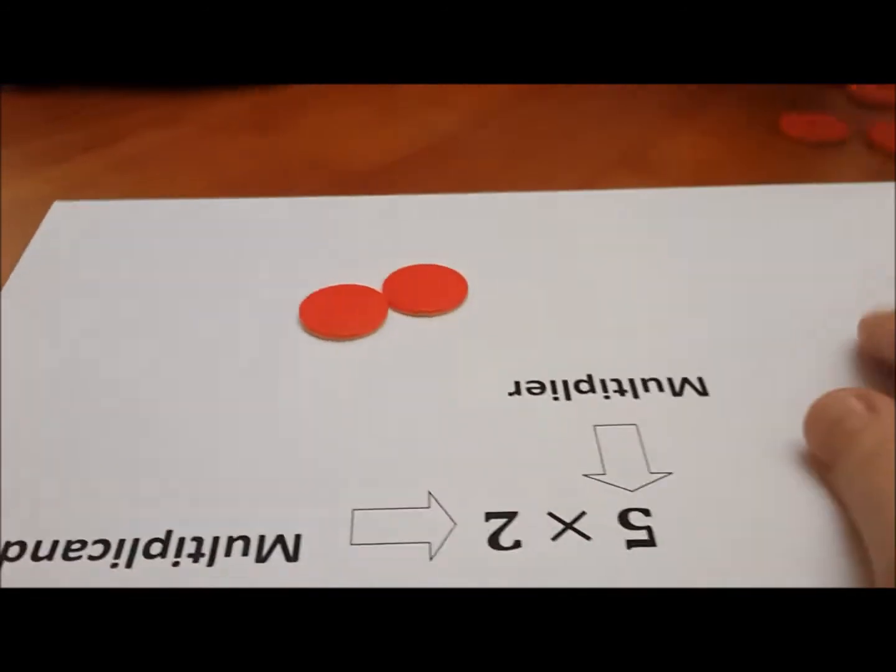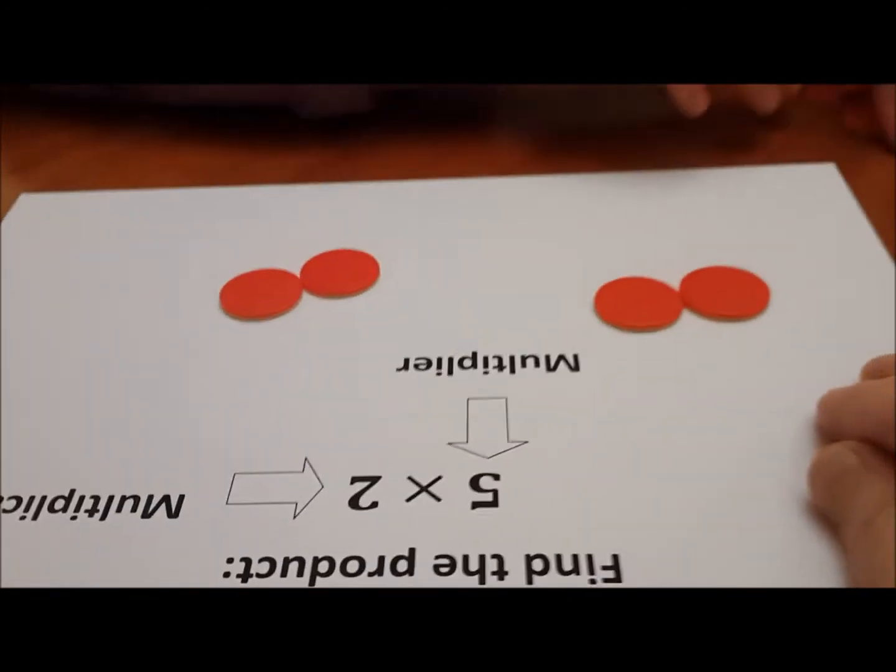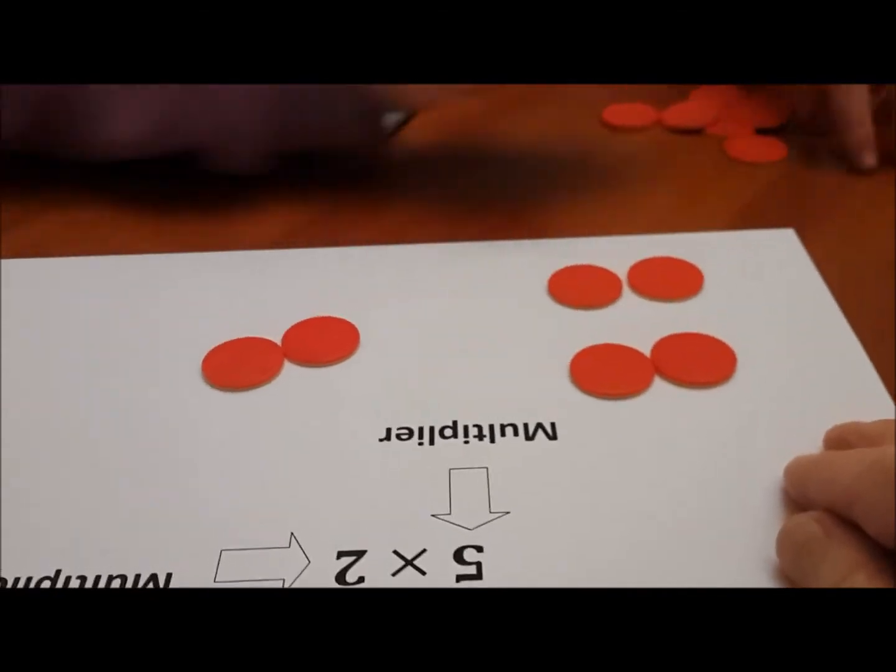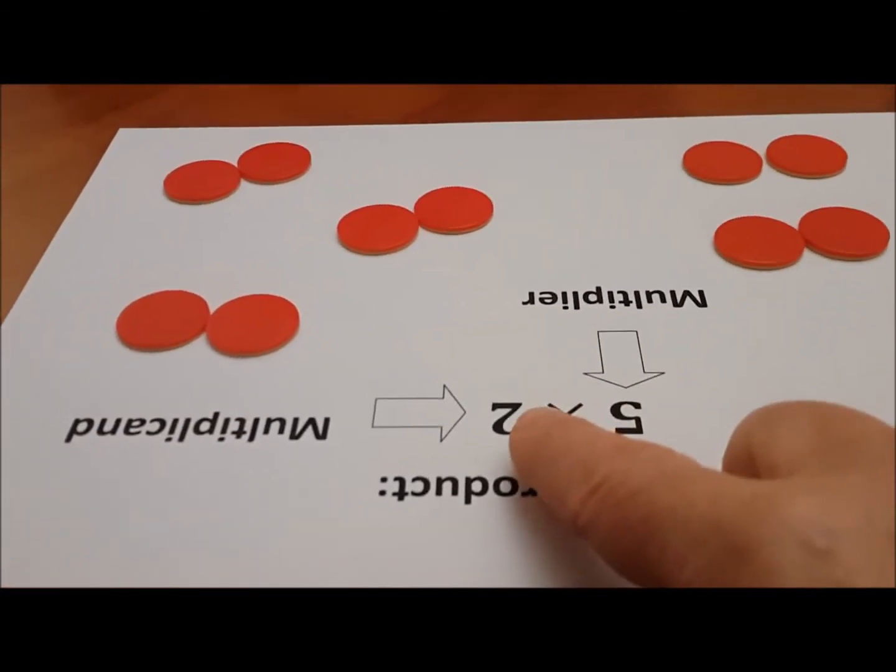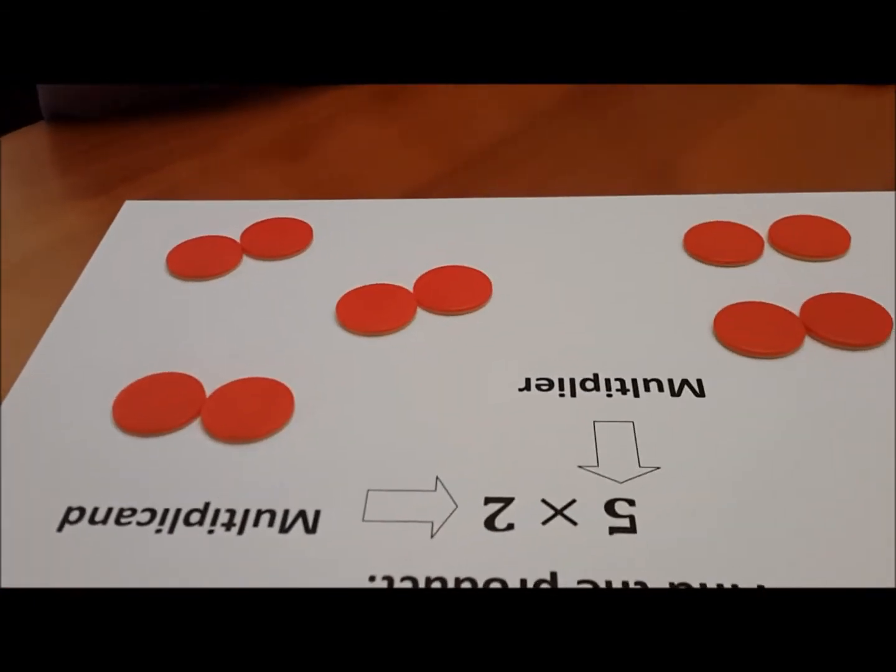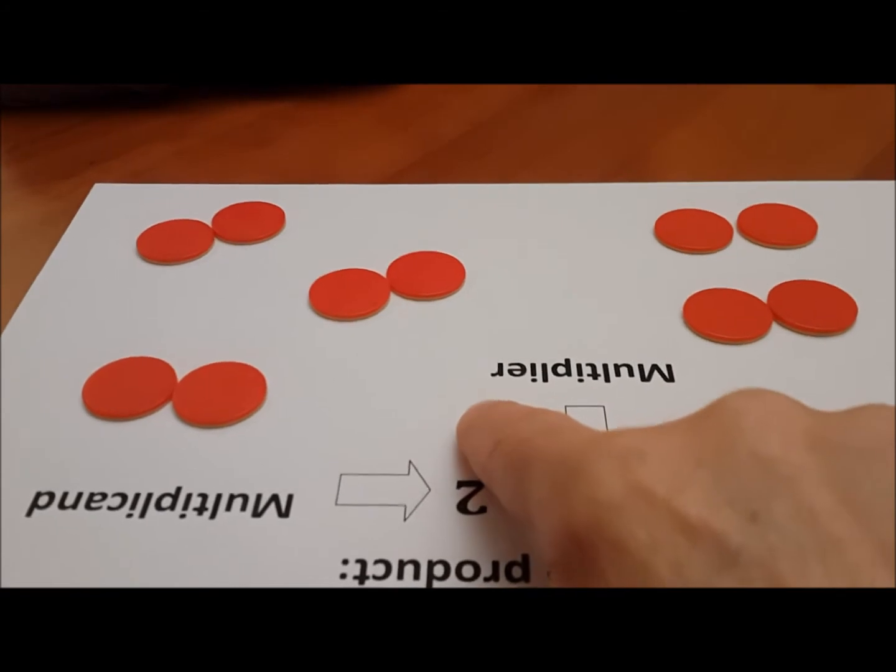Here's two one time. Do this five times: two sets, three sets, four sets, five sets. So how much is five times two? Therefore, ten. Please write ten over here.